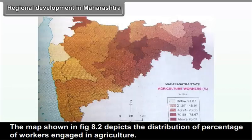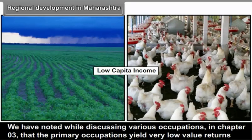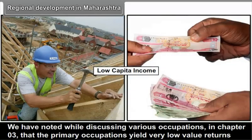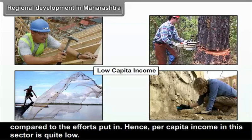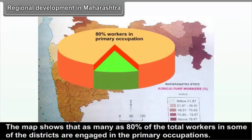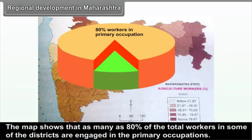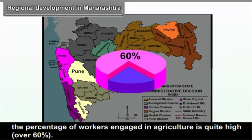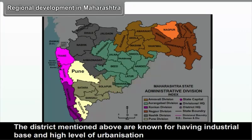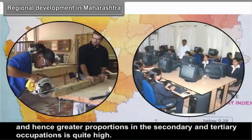The map in figure 8.2 depicts the distribution of percentage of workers engaged in agriculture. Primary occupations yield very low value returns compared to the efforts put in, so per capita income in this sector is quite low. As many as 80% of total workers in some districts are engaged in primary occupations. Except for districts like Mumbai, Thane, Pune, Nagpur, Raigad and Kolhapur — known for industrial base and high urbanization — the percentage of workers engaged in agriculture is over 60%.